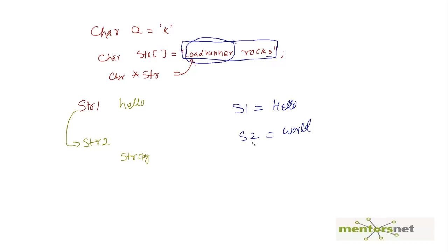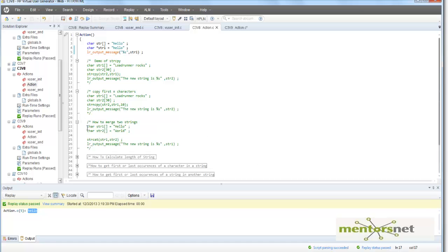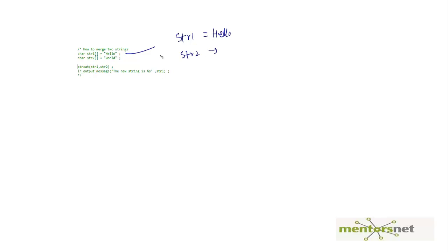Let's say str1 is 'hello' and str2 is 'world'. How do I merge these two strings into 'hello world'? There is a function called strcat — string concatenation. You call strcat, and the second argument str2 gets merged with str1. After that statement, str1 points to the concatenation of the two strings, 'hello world'. That is what strcat does.